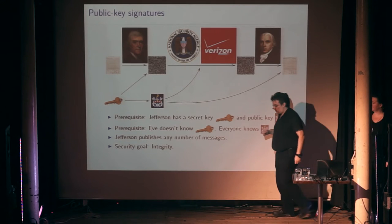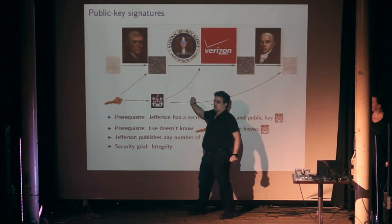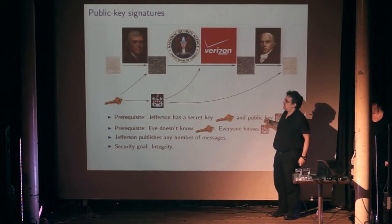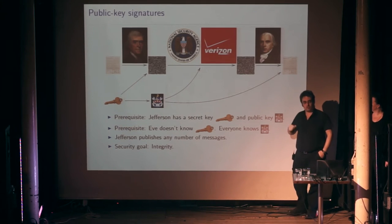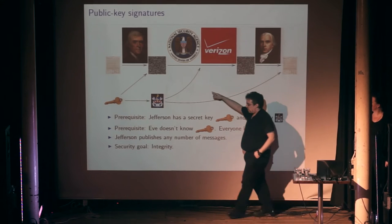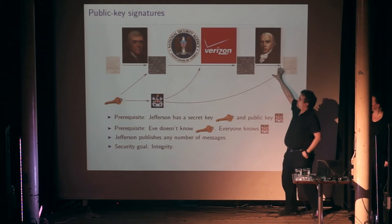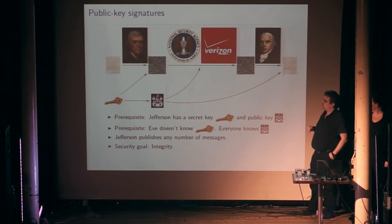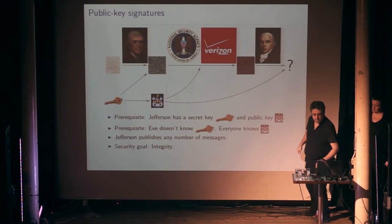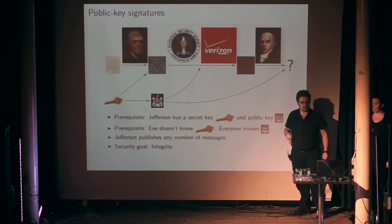That's what this transformation is doing — taking this secret key, taking the message and converting it into some scrambled message. Whatever mathematical transformation is happening there, that's guaranteeing that nobody other than Jefferson could have created this scrambled message. Anybody who calculates using the public key and the scrambled message and gets the Declaration of Independence can be assured that nobody other than Jefferson could have scrambled a message in that way. That's integrity — if the message is changed, Madison will figure it out and say that's not legitimate.